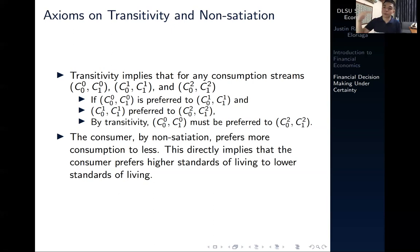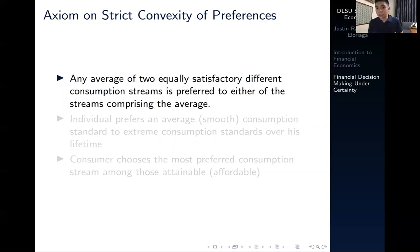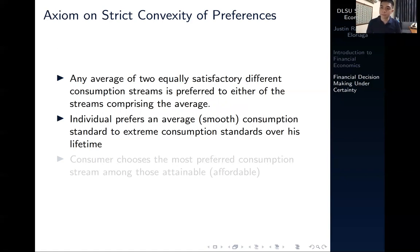We're going to measure this with a utility function later on. One of the last axioms on consumer preferences is strict convexity, which states that any average of two equally satisfactory but different consumption streams is preferred to either of the two. As in micro theory, a consumer prefers averages to extremes. In financial economics, an individual prefers a smooth consumption standard to extreme standards over a lifetime.